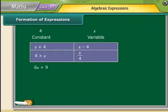Let us see how the algebraic expression 6x + 9 is formed. It's really simple. First multiply variable x with constant 6, then add a constant 9 to the product.